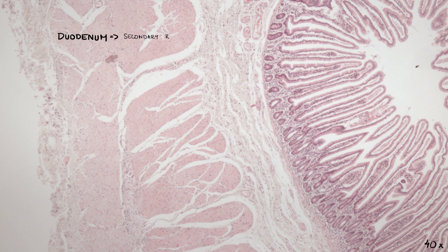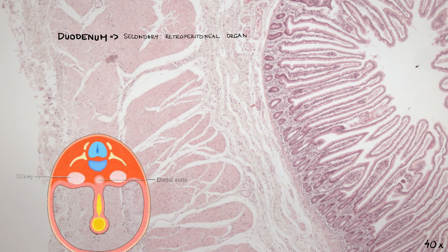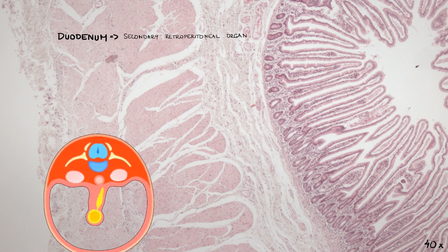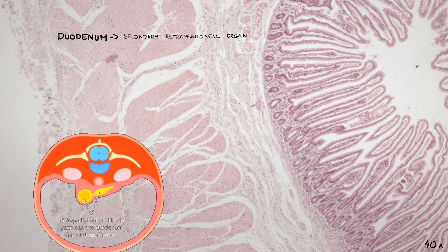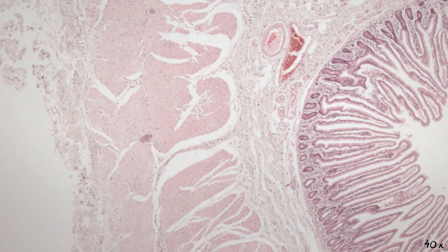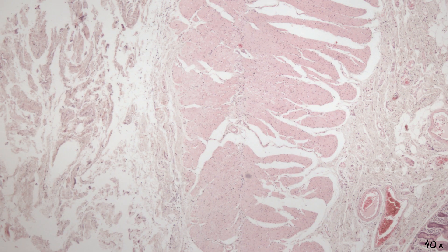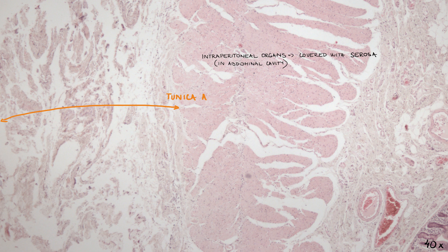The duodenum is a secondarily retroperitoneal organ. As it was being formed in early stages of embryonic development, it was originally within the abdominal cavity, but as the gut rotated, it made contact with the parietal peritoneum and adhered to it. Thus the duodenum ended up being a retroperitoneal organ, except for the duodenal bulb, which is the part closest to the stomach. Intraperitoneal organs are covered with serosa, while adventitia — which covers most of the duodenum — is made up of loose connective tissue comprising lots of vessels and fat.